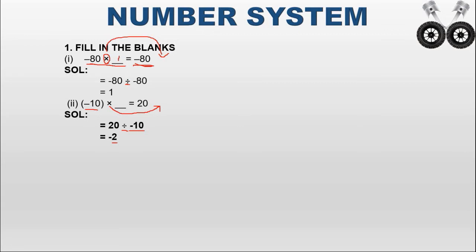In division, if one number is positive and another is negative, the result is negative. If both are positive, the result is positive. If both are negative, the result is positive. Here, 20 is positive and minus 10 is negative — different signs — so the answer is minus 2. Therefore, minus 10 into minus 2 equals 20.